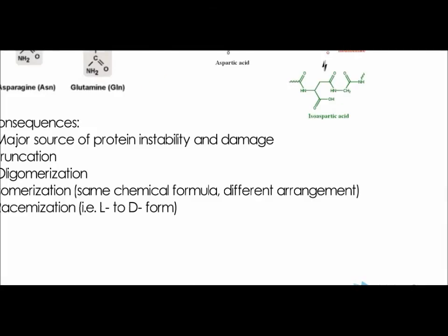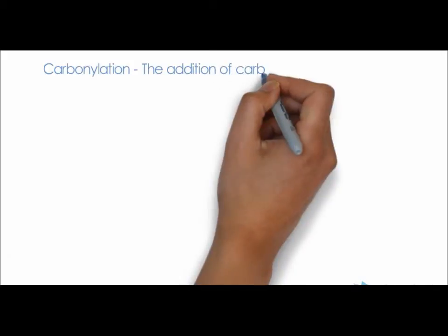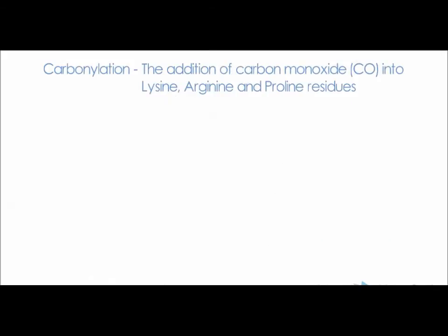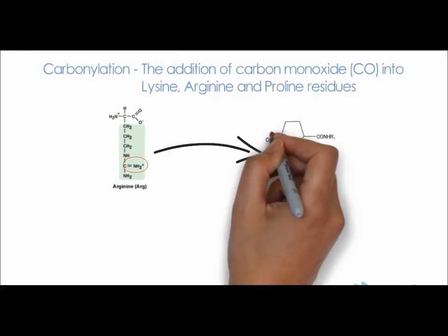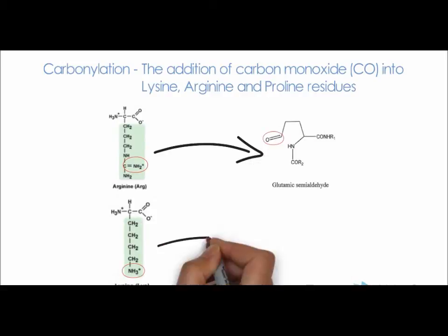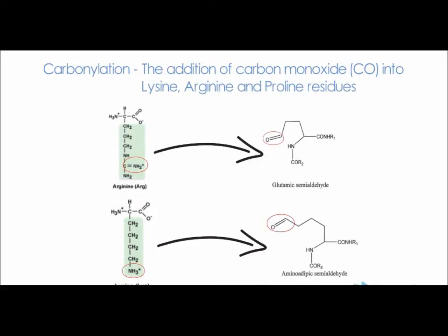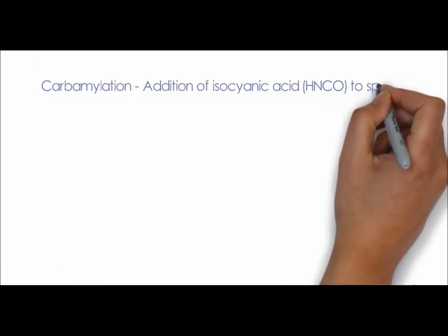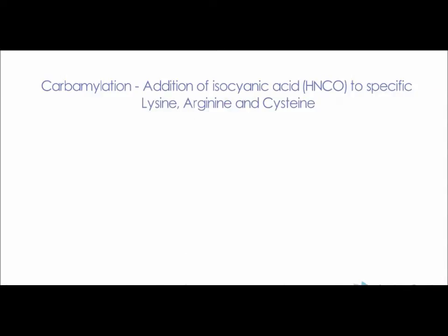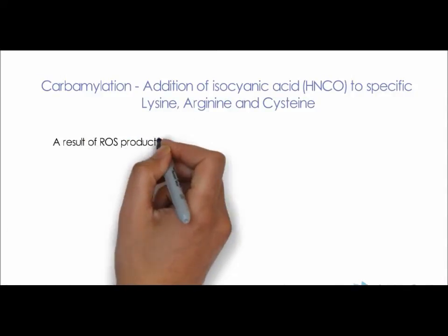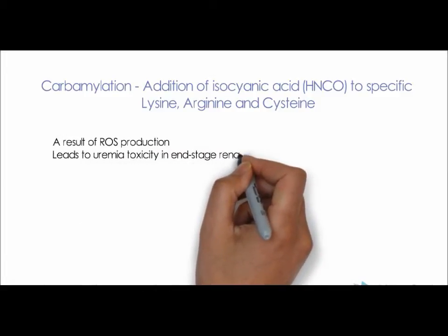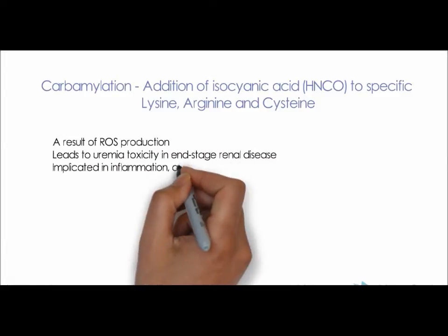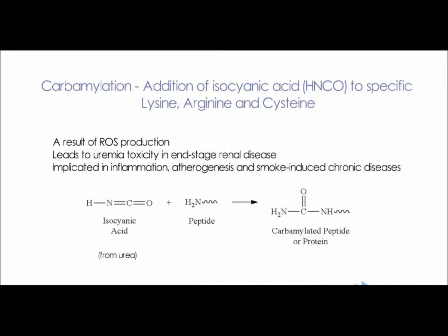Next, we'll look at carbonylation, which is the addition of a carbonyl group into lysine, arginine, and proline residues, as shown in the diagram. We'll also look at carbamylation, which is the addition of isocyanic acid to specific lysine, arginine, and cysteine residues. It is a result of ROS production, and it leads to uremic toxicity in end-stage renal disease. It is also implicated in inflammation, atherogenesis, and smoke-induced chronic diseases. The following diagram shows how isocyanic acid is added to the peptide.